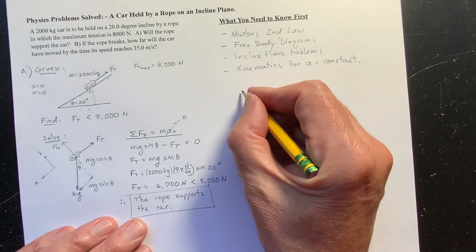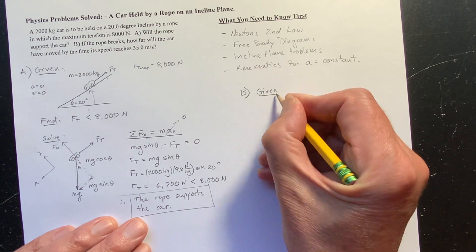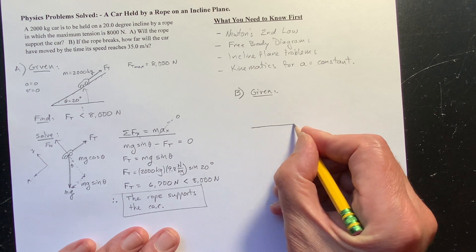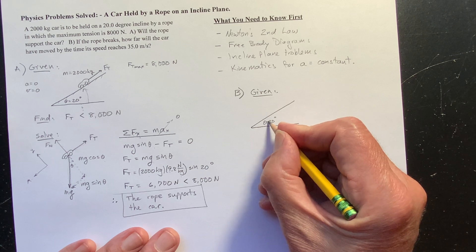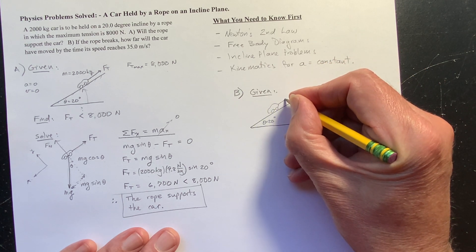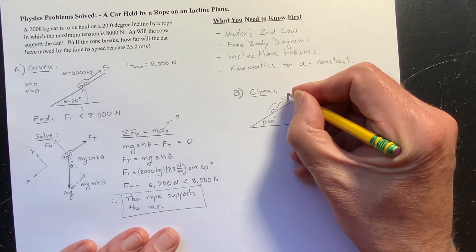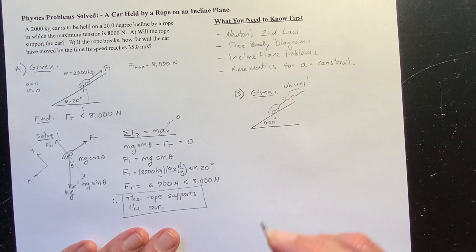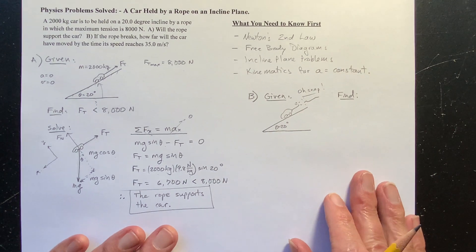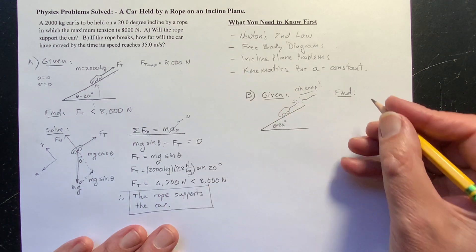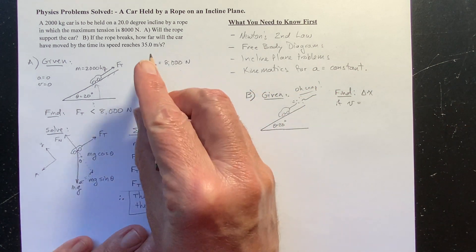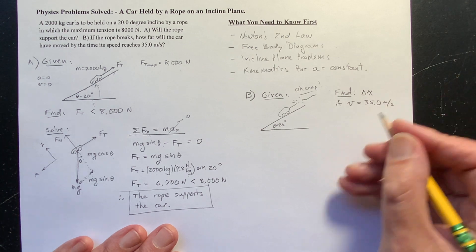Now, part B, I'm going to go ahead and use given, find, and solve for part B. Now, given, suppose the rope does snap. Suppose the rope breaks for some other reason. Maybe somebody cut it with a knife or whatever. And so here's my car, again, on this 20 degree incline, theta equals 20 degrees. I'll redraw the car here. And here's the rope, but oh, snap. So it snaps. So we no longer have that. So what we want to find is how far will the car go? That's delta x. That's my displacement of the car. If V final equals 35 meters per second.